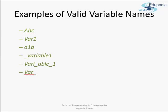Here are some examples of valid variable names in C: A, B, C, var1. You can use numbers in a variable name but it must begin with an alphabet or an underscore. So A1B is valid, and _variable1 is also valid because a variable name can begin with an underscore in C. var1 is also valid — you can have a look at all these examples.